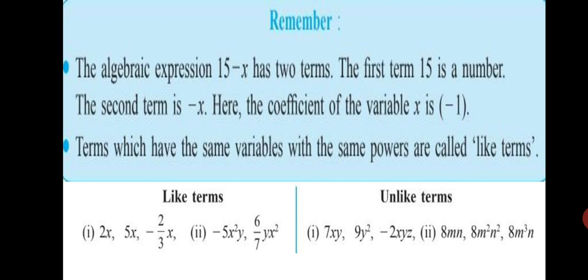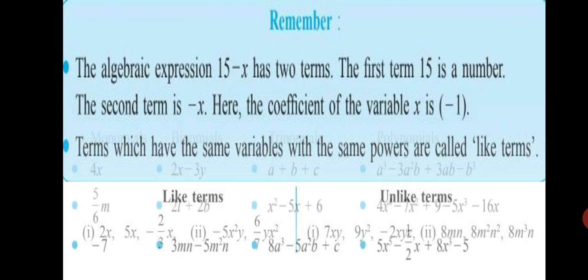Second example for unlike terms. 8mn, 8m square n square, 8m cube n. You will see in all the terms for second example, mn is the variable, but the powers are not same. So, they come in the category of unlike terms. So, for terms to be considered as like terms, their powers also should match.